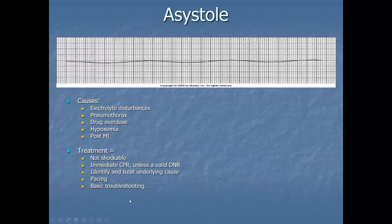Asystole: causes include electrolyte disturbances, pneumothorax, drug overdose, hypoxemia or hypoxia, and post-MI. This is not a shockable rhythm, despite what TV shows portray. Treatment: immediate CPR unless there's a valid DNR, identify and treat the underlying causes, and pacing with basic troubleshooting.